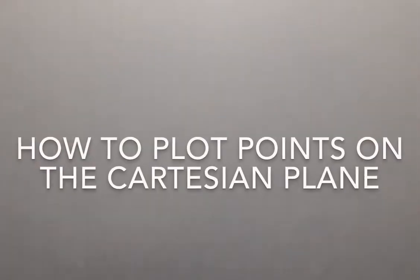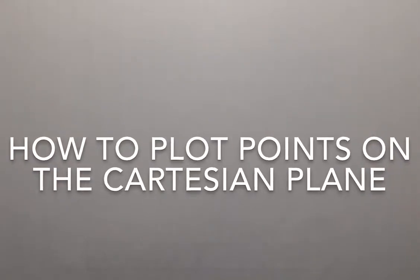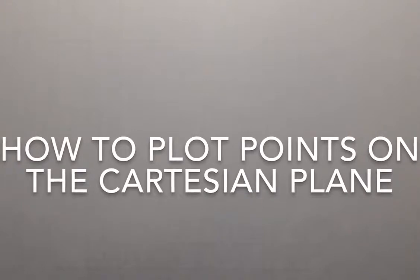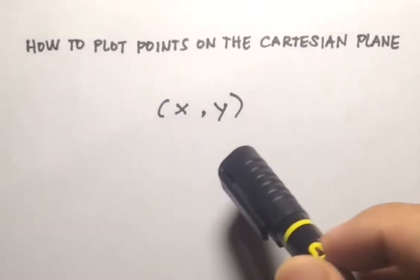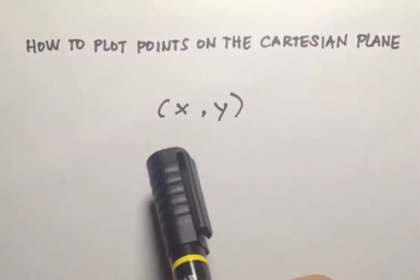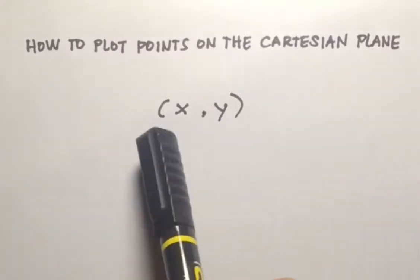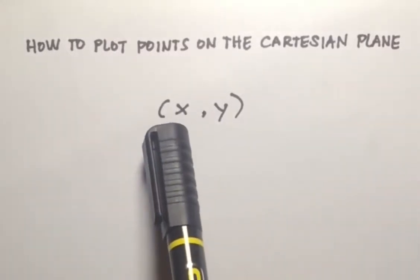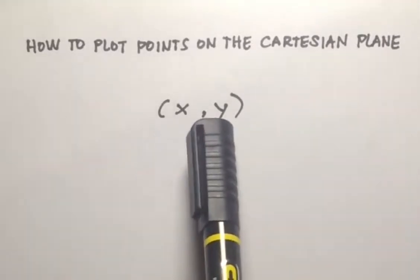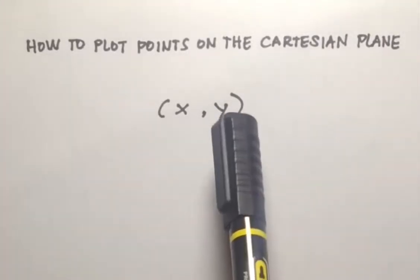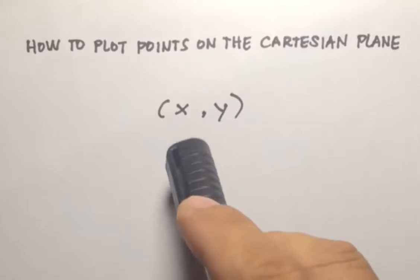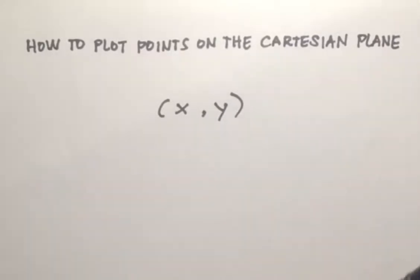Hello and welcome back to my channel. For this video I will be discussing how to plot points on the Cartesian plane. The ordered pair, or point, is in the form (X, Y), where X is called the abscissa and Y is called the ordinate or coordinate.